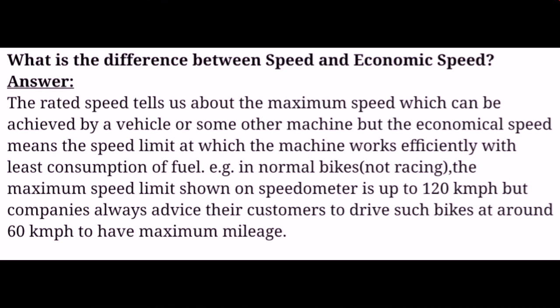What is the difference between speed and economic speed? The rated speed tells about the maximum speed which can be achieved by a vehicle or some other machine. But the economical speed means the speed limit at which the machine works efficiently with least consumption of fuel. For example, in normal bikes, the maximum speed limit shown on the speedometer is up to 120 kmph, but companies always advise their customers to drive such bikes at around 60 kmph to have maximum mileage.